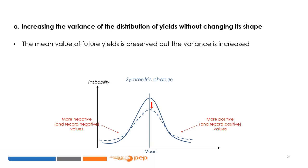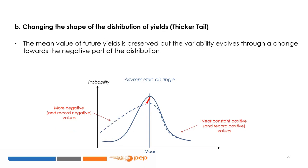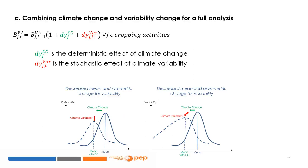The second option consists of changing the shape of the distribution of yields by considering a thicker tail, and thus an increased weight of future negative shocks. In that case, the probability distribution preserves its mean. However, the variability evolves through a change in asymmetry towards the negative part of the distribution — constant positive values but increases in negative and record negative values. In a last option, it can be interesting to combine the long-run deterministic effects and the shorter-run stochastic effects of a future changing climate for a full assessment analysis of its effects on yields. This can be done by imposing both changes in mean and variance in future yield series, either for symmetric or asymmetric changes in variability.